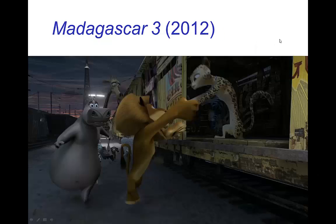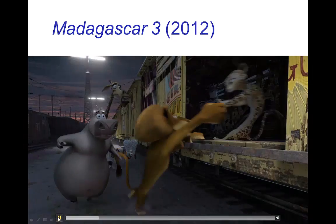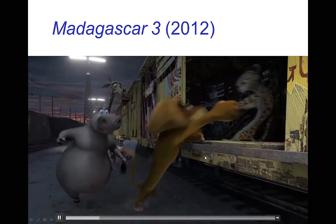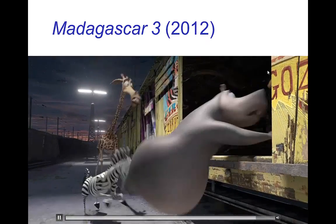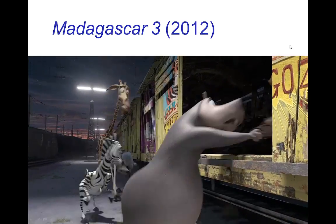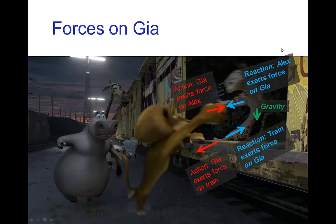Let's look at how we can analyze a quick shot from Madagascar 3 in terms of what's going on with the different forces. Let's watch where Gia is pulling Alex into the train car and see how we can make that believable. Let's start by looking at the forces on Gia. Gia is pulling on Alex — if that's the action, then there's a reaction which is Alex exerting a force back on Gia. So even if he's just holding her hand, the fact that she pulls on him means there's a resulting reaction force pulling her outward. There's also the force of gravity on her.